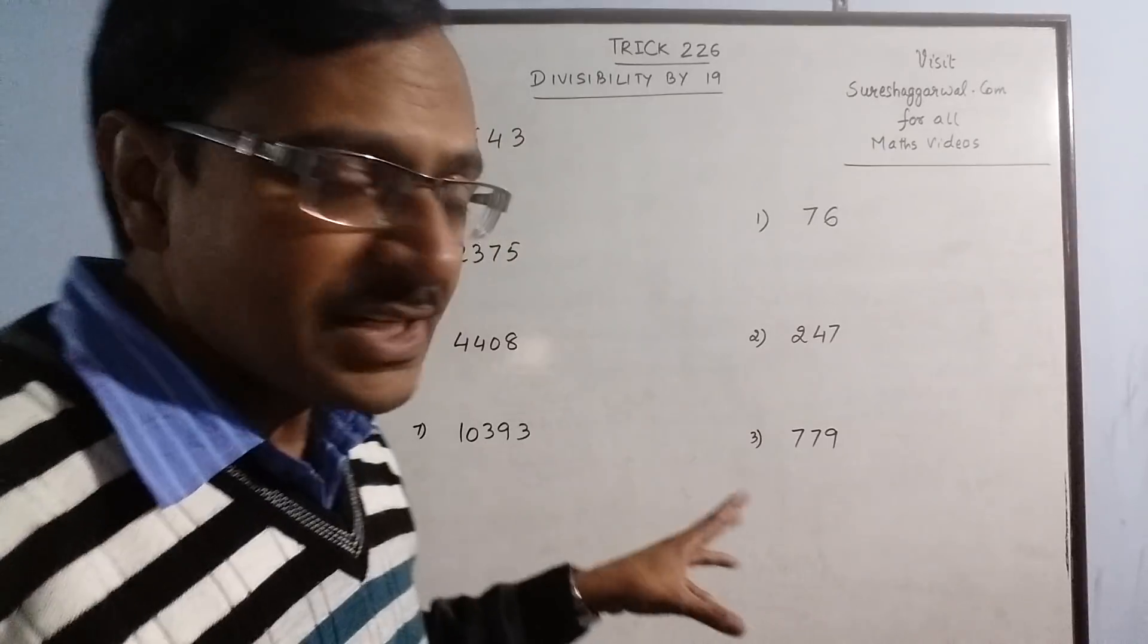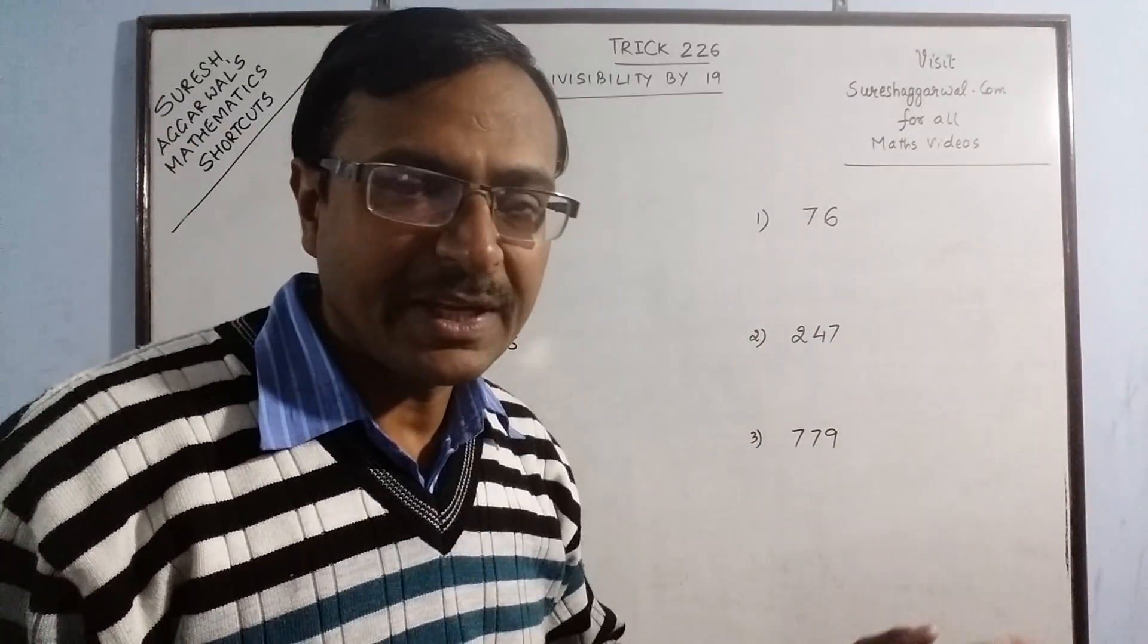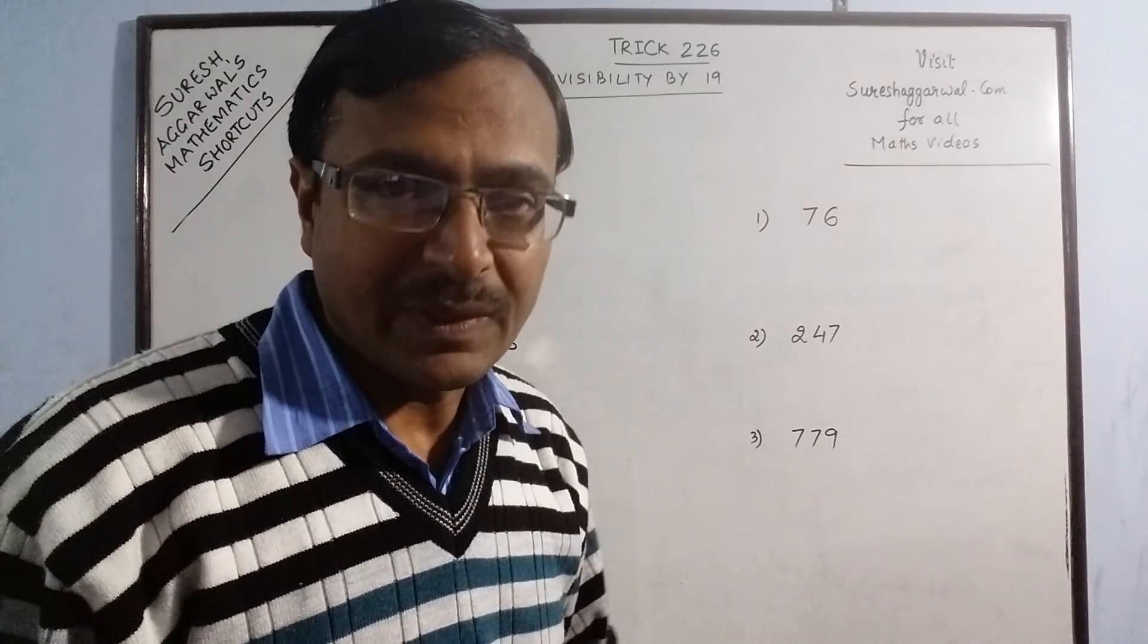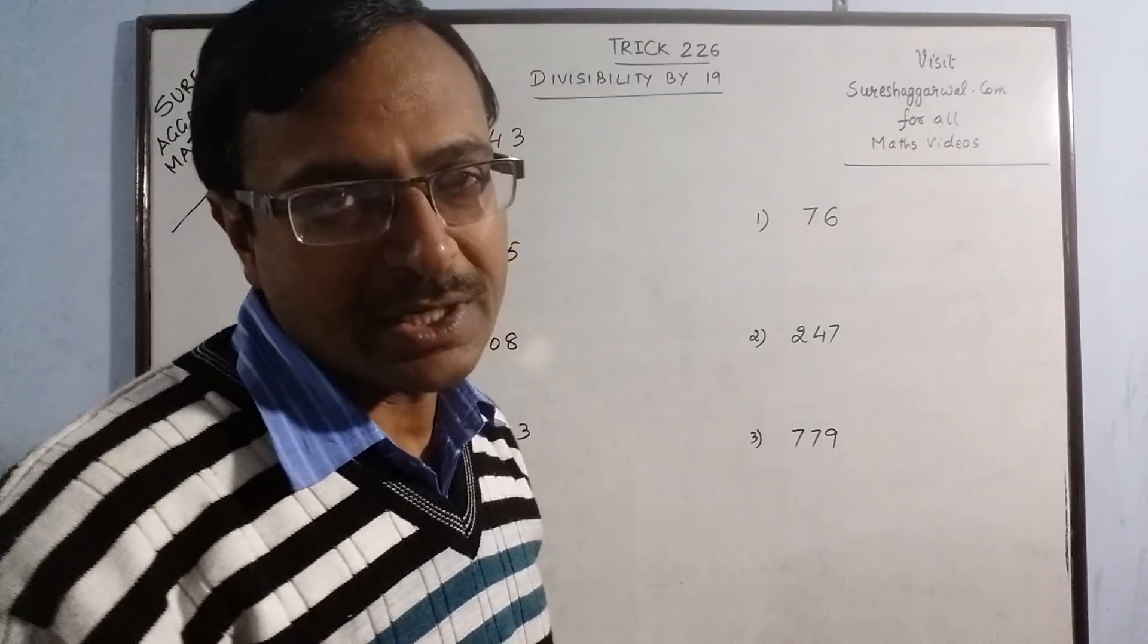So to understand this method, I will take a very simple example of 76. Obviously 19 for 76, so 76 is divisible by 19, that can be tested orally, but to understand the method we need to take a simple example.